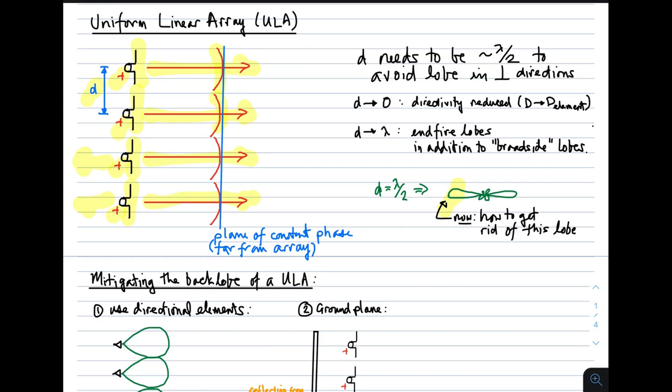The spacing between elements, D, is not obvious to start with. In a broadside array such as this, we have some flexibility in what the spacing can be. But I will tell you it needs to be about half a wavelength or so to avoid a lobe in the perpendicular directions. If this distance D is too far from lambda by 2, you will have something start to form in those directions. Lambda by 2 is the sweet spot.